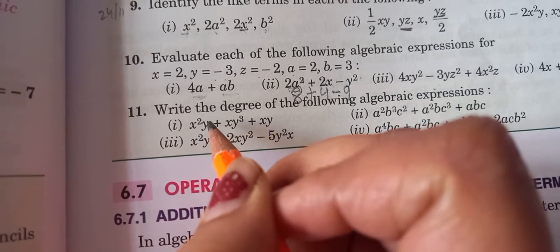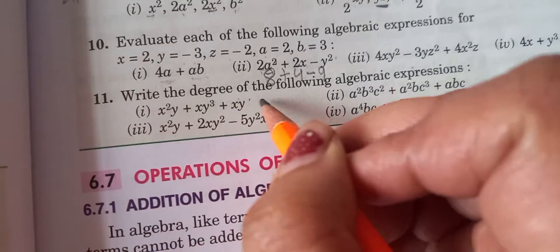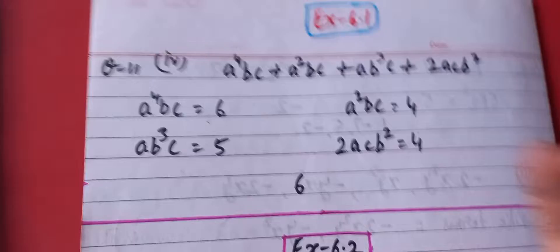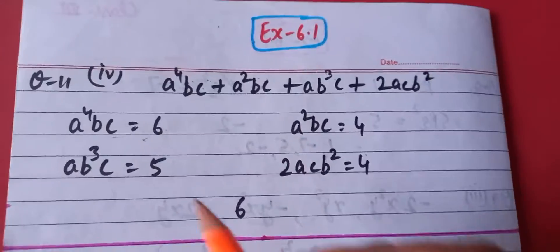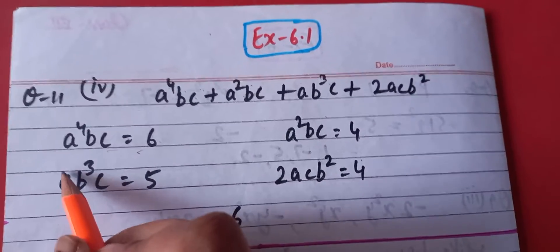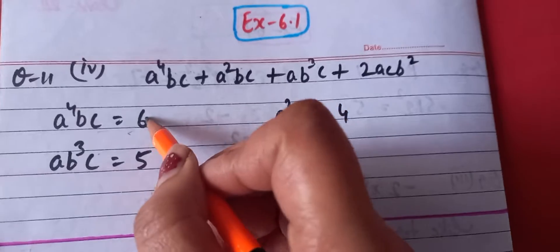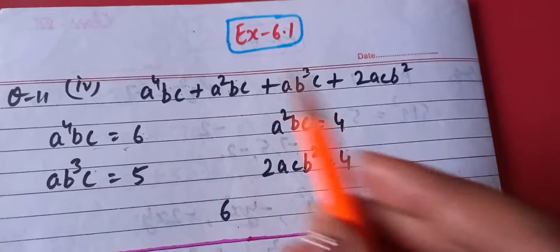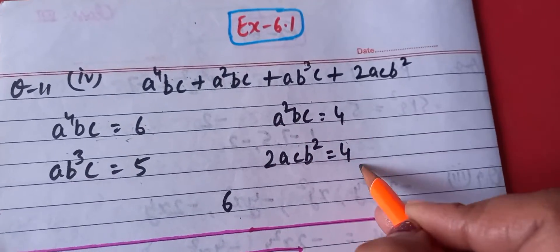In question 11, you have to find the degree of the expression. Check the power of the variables: 2 plus 1 is 3; 3 plus 1 is 4; 1 plus 1 is 2. The highest power is 4, so the degree is 4. In another term: 4 plus 1 plus 1 — power is 6. There are four terms; check all four separately: 2 plus 1 plus 1 is 4; 1 plus 3 plus 1 is 5; 1 plus 1 plus 2 is 4. The highest power is 6, so 6 is the degree of expression. Add the powers of all variables in each term, and the highest sum is the degree of expression.